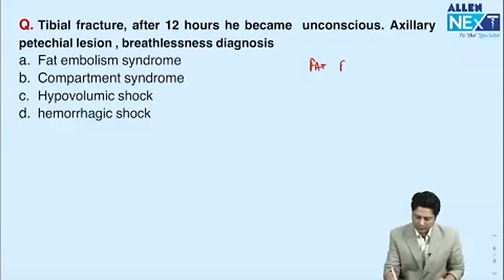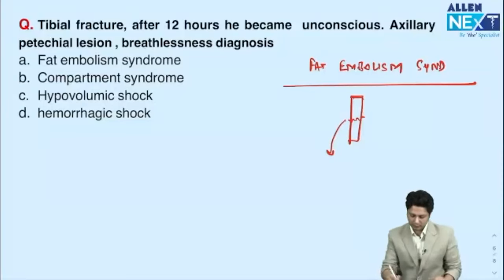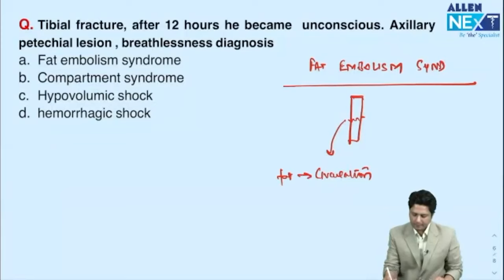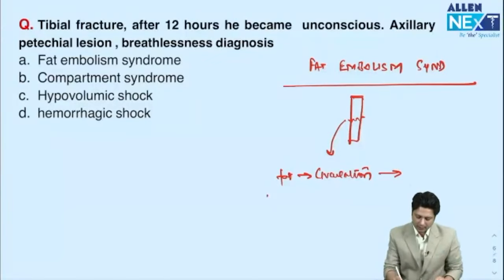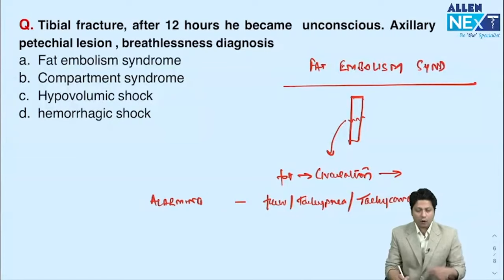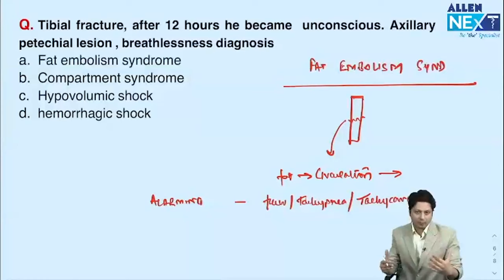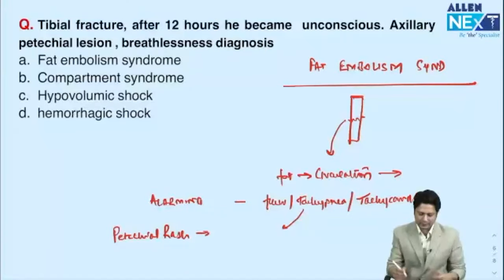Fat embolism syndrome: one of the dreadful complications of fractures. When a long bone fractures, fat globules from the medullary canal can enter circulation. Clinical features: fever, tachypnea, and tachycardia are alarming signs. The pathognomonic finding is petechial rash scattered over the trunk, abdomen, and conjunctiva. Over time, the emboli reaching pulmonary circulation cause respiratory distress, and the patient may go into coma or die.